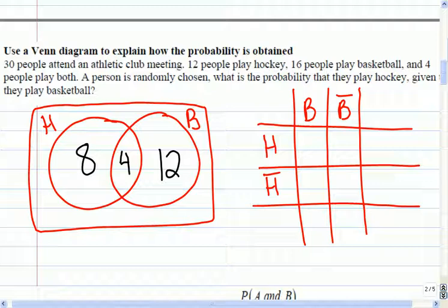Well, there's 30 people in the meeting, so yeah, there's 6 left over. So 6 that play neither. Okay, let's fill in the table just so we remember how that goes.